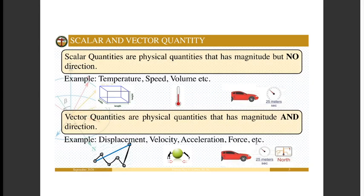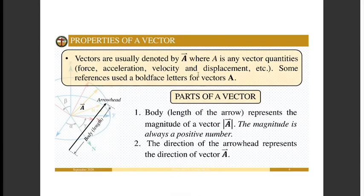How about velocity? Velocity is similar to speed, but velocity requires direction. For example, '25 meters per second north' — it has both magnitude and direction. The magnitude of the velocity, the 25 meters per second, is actually the speed. Velocity is the vector representation of speed, just as displacement is the vector representation of distance. Other examples of vector quantities include acceleration, force, and many more.